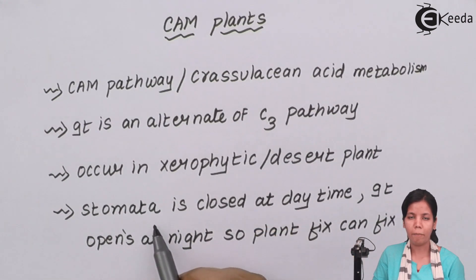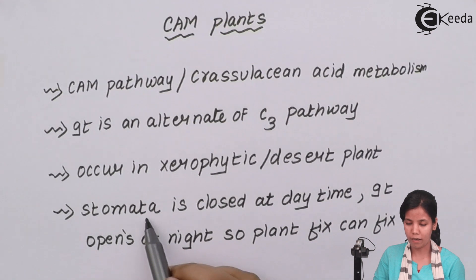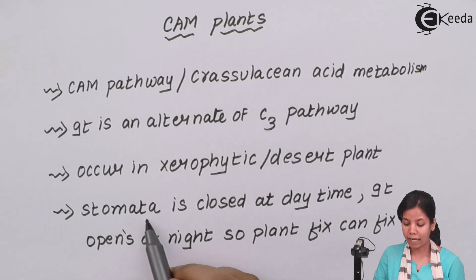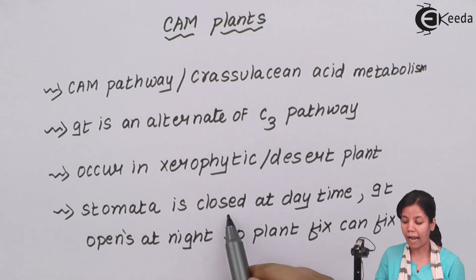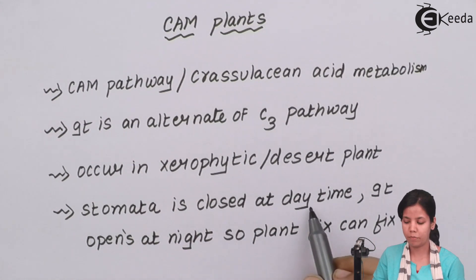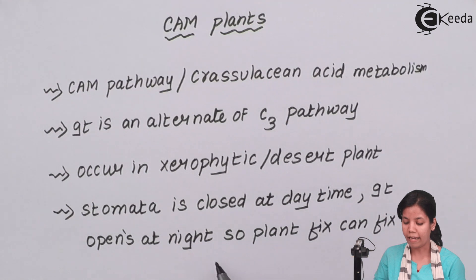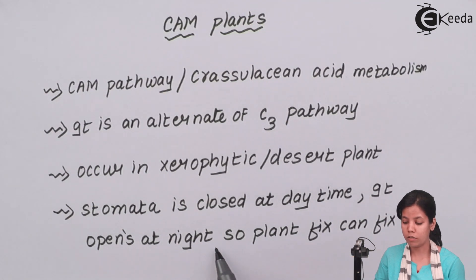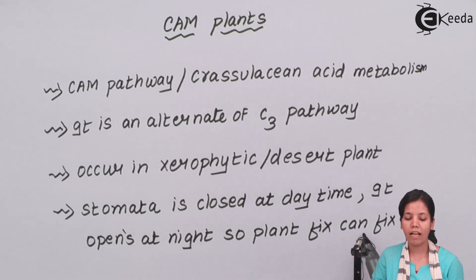The reason for CAM pathway occurrence is that the stomata — the openings present in the leaf of a plant — are closed at daytime to avoid loss of water due to transpiration. At nighttime the stomata opens so that the plant can fix carbon dioxide.